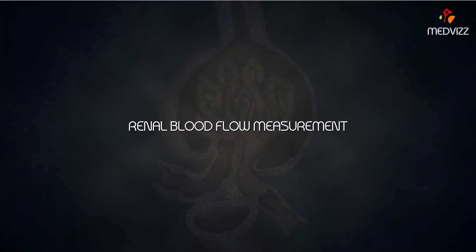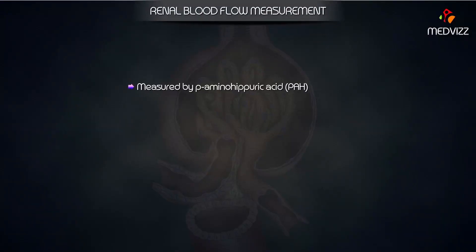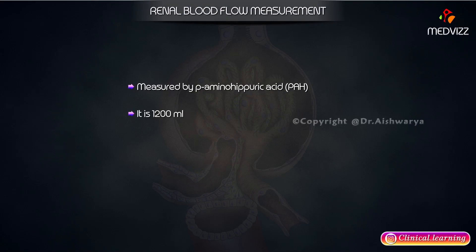Renal blood flow measurement. It is measured by para-aminohypuric acid. It is 1,200 ml. Effective renal plasma flow is 625 ml per minute.